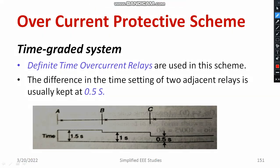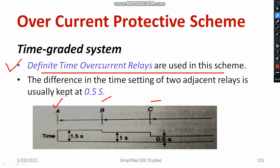Consider the diagram. We have three relays: A, B, and C. Relay A will be near to the source. The time graded system is based on a particular predefined time — definite time overcurrent relays are used for this scheme. For example, relay C operates at 0.5 seconds, relay B at 1 second, and relay A at 1.5 seconds, where relay A is nearby the source. The difference between the time setting of two adjacent relays is kept as 0.5 seconds.